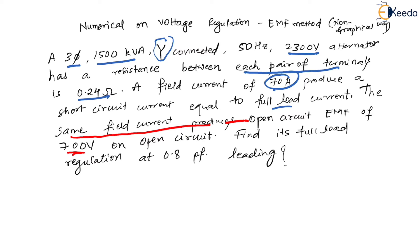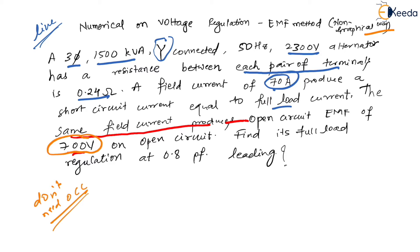Find the full load voltage regulation at 0.8 power factor leading. All the given values are line values. Now, for OCC — you don't need OCC here; that is the reason we don't use the graphical method. They have already given you the value of open circuit voltage directly, so you don't need the OCC curve.